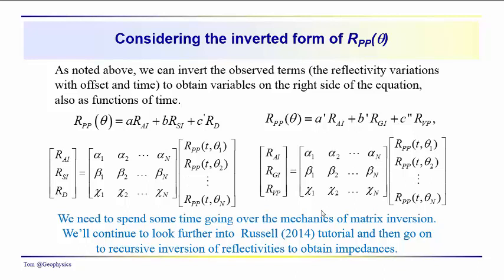So we're going to spend some more time on the mechanics of matrix inversion. We'll continue on with some of the materials presented in Russell's tutorial. And then we'll go on to recursive inversion and reflectivities to obtain impedances. So we're kind of with our main objective in mind to eventually lead us to a lambda-ro-mu-ro formulation, which we'll get to eventually after we go through the mechanics here.